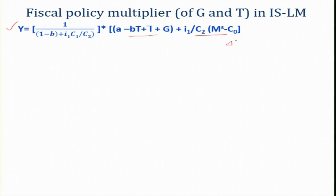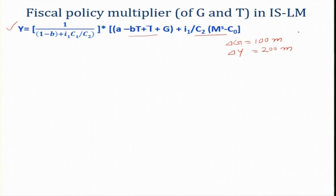Here, what we are going to do is ask: what if government expenditure is increased by, for example, 100 million? If output also increases — say output has increased by 200 million due to the increase in government expenditure — then the government expenditure multiplier is going to be 2, because 200 divided by 100 gives us the multiplier of 2. What this means is that with a government expenditure increase of 100 million, we see a 2-times increase in output. This is the basic intuition behind the multiplier idea.